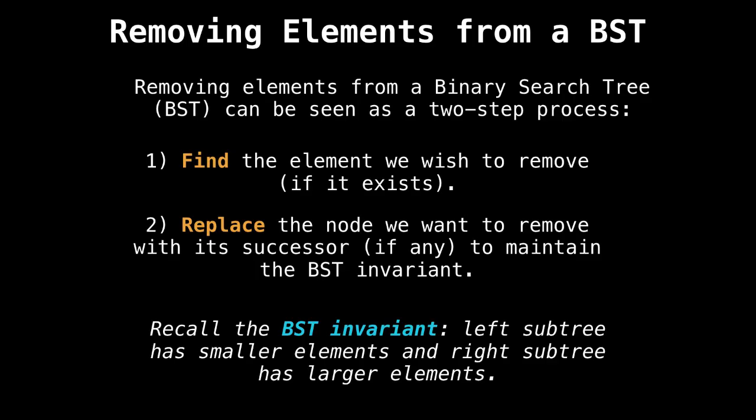Just for review, I want to look at how to remove nodes in a binary search tree in detail. We can generally break it up into two steps: finding and replacing. In the find phase, you find the element you want to remove from the tree if it exists, and then replace it with a successor node. The successor node is necessary to maintain the binary search tree invariant.